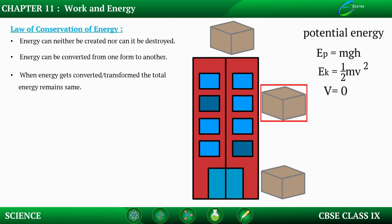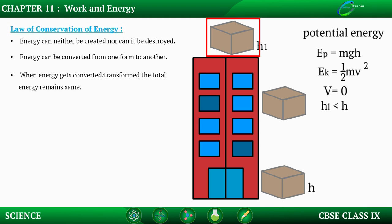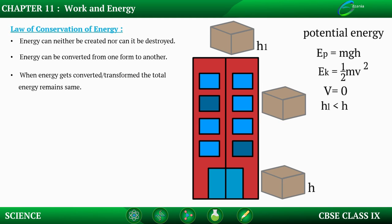As the box falls, mgh — now it has come down to a certain height H1, where H1 is less than H. So potential energy is less now compared to before, but it has gained velocity, which has been converted into kinetic energy. Potential energy is maximum at the top and kinetic energy is 0 at the start. As it starts falling, kinetic energy increases and potential energy decreases. When it comes further down, potential energy will be even less because H is smaller, and kinetic energy will be more — the object moves with higher velocity, it is accelerated. In this falling box system, potential energy keeps decreasing and kinetic energy keeps increasing.